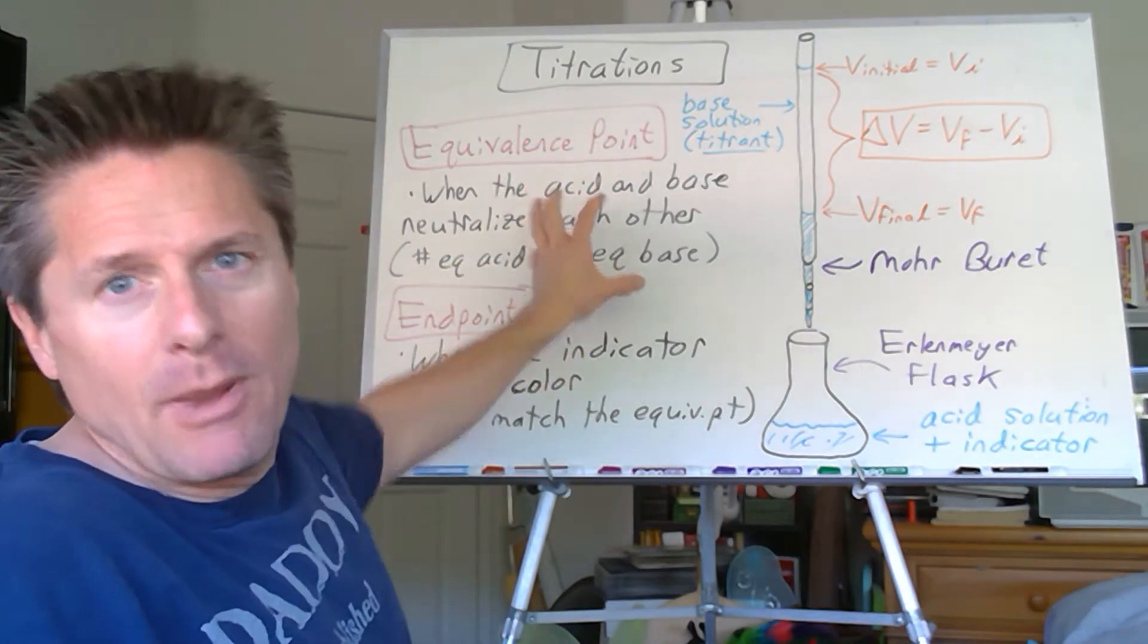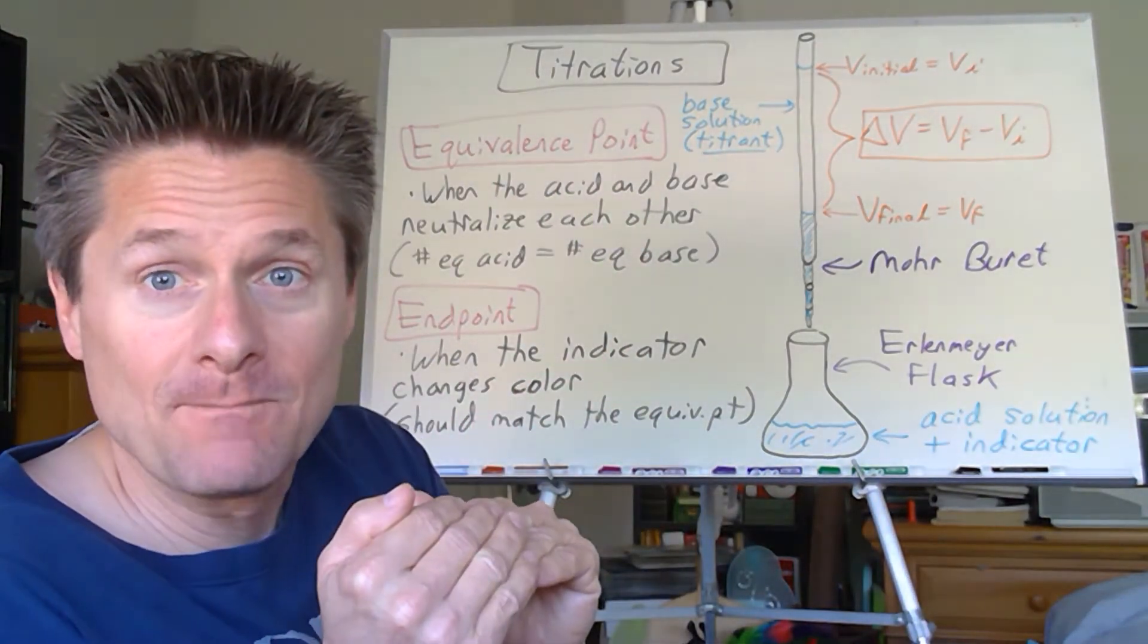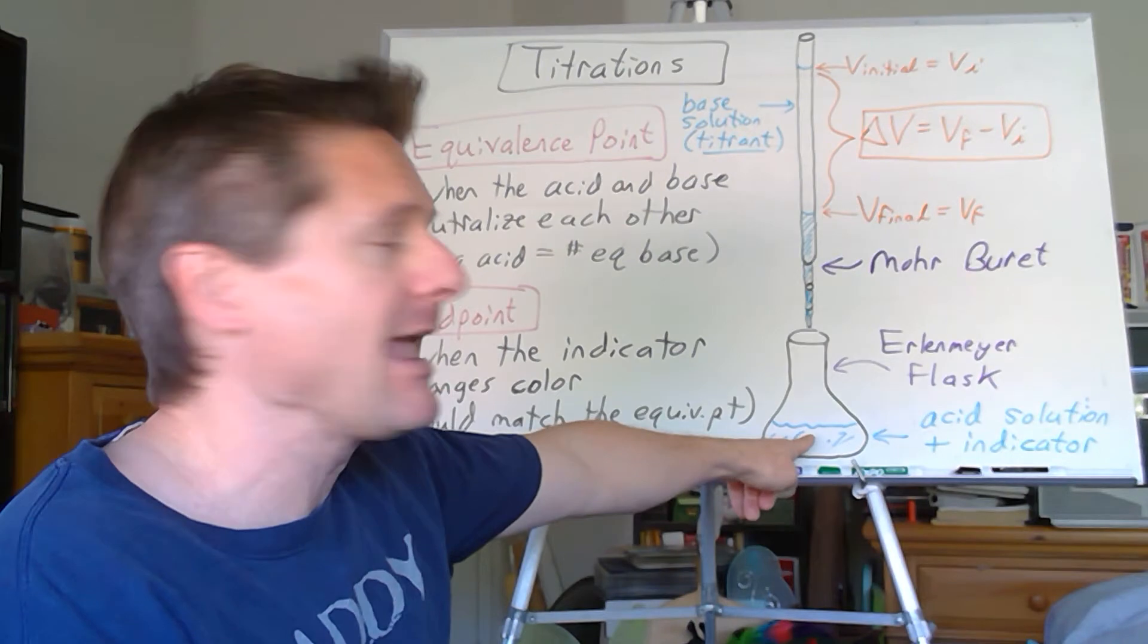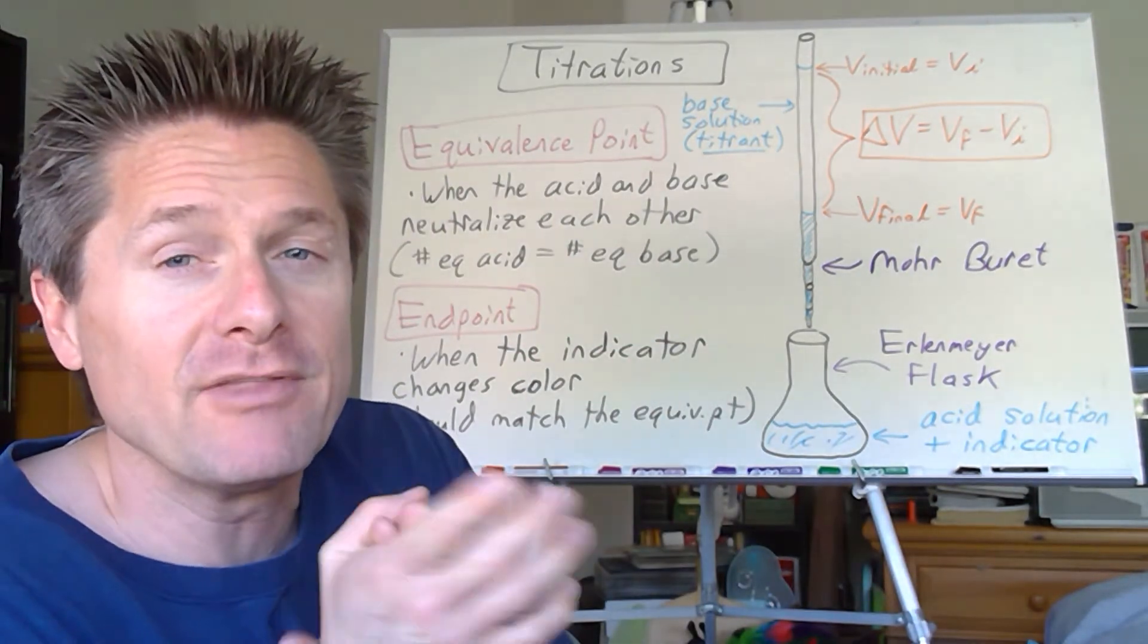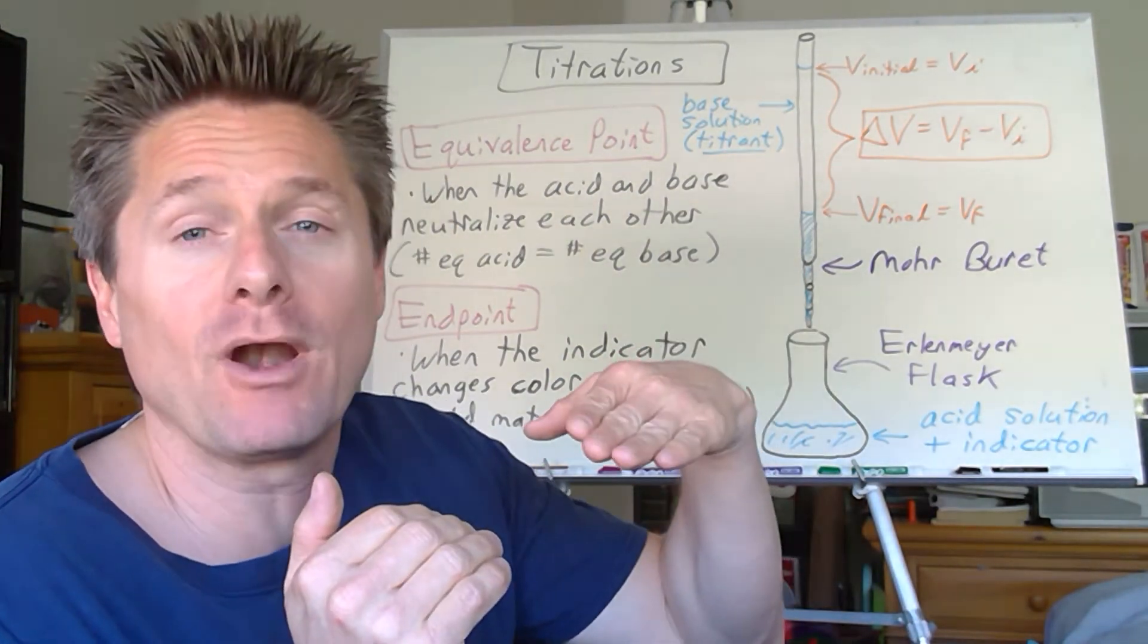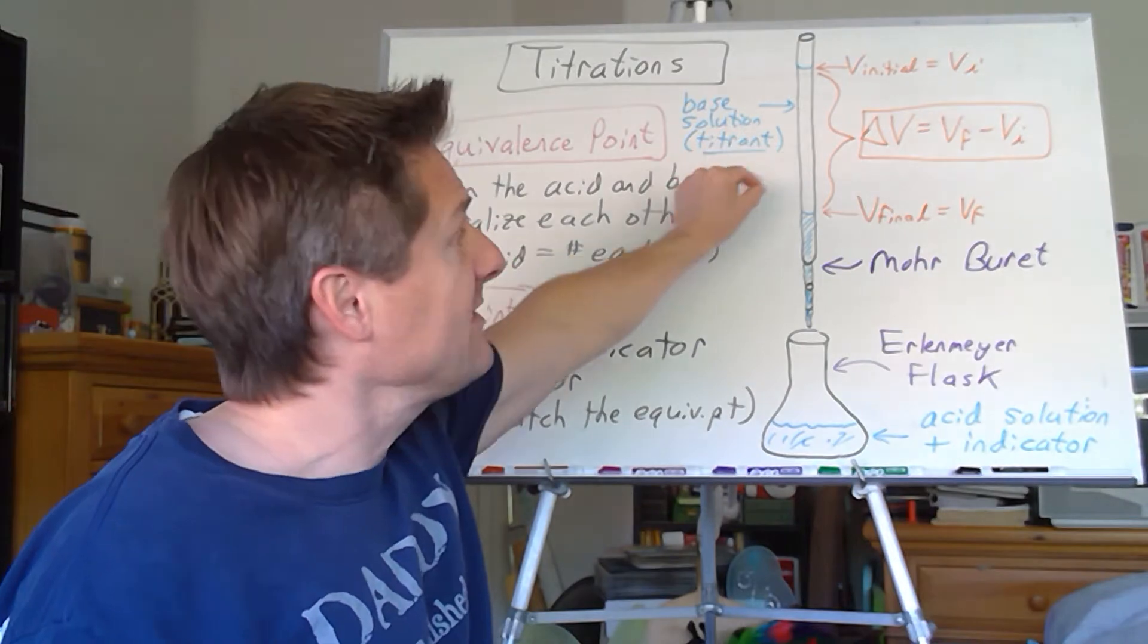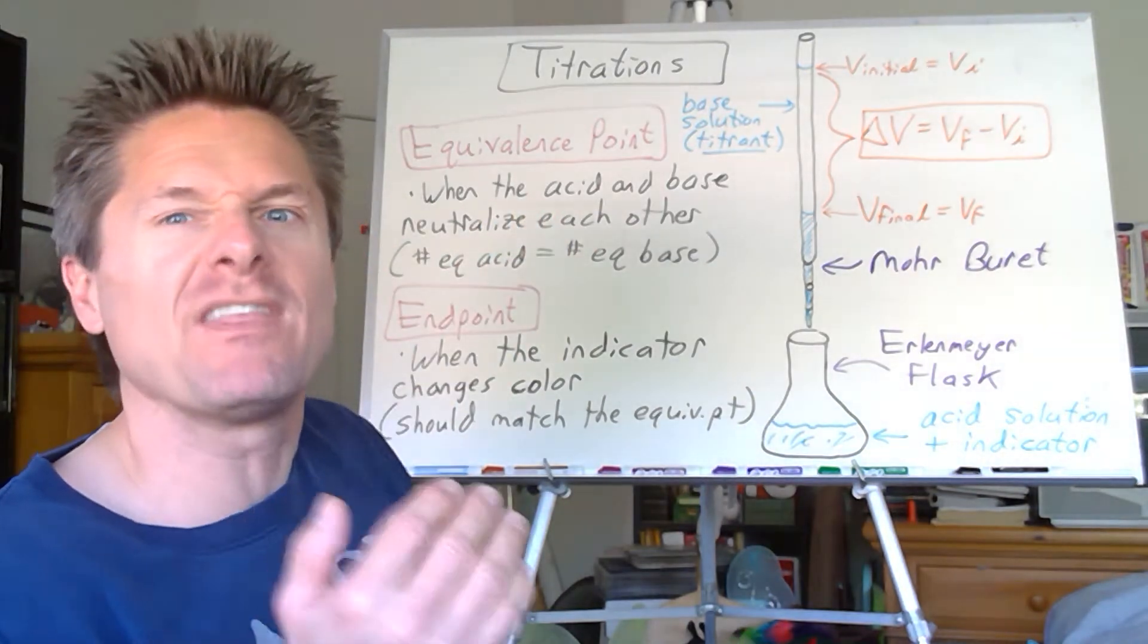So these are the two theoretical terms we need to remember. The equivalence point is when the acid and the base neutralize each other exactly. And we do that based on equivalence rather than moles. It's not called the mole point. It's called the equivalence point. So if I had 0.2 equivalents of acid, it would require 0.2 equivalents of base to neutralize it. It's always a one-to-one ratio regardless of the identity of the acid or base. Once we've done that, that's the equivalence point. They've exactly neutralized.